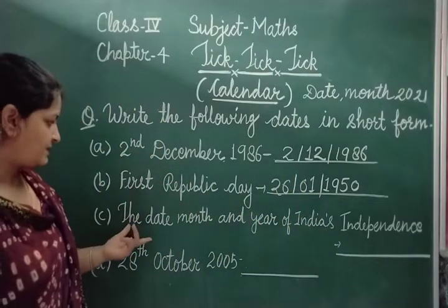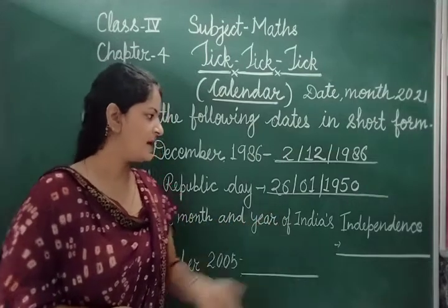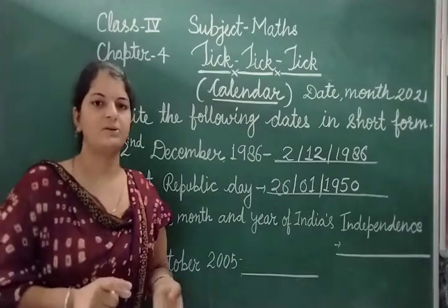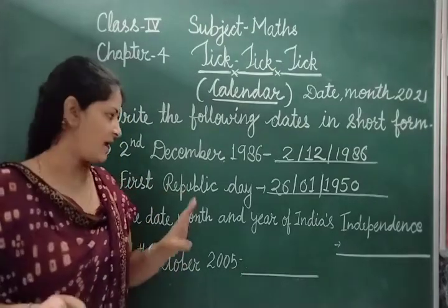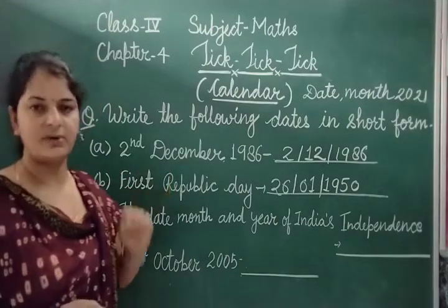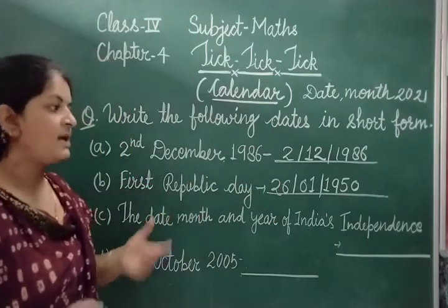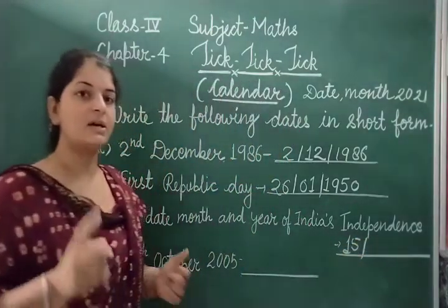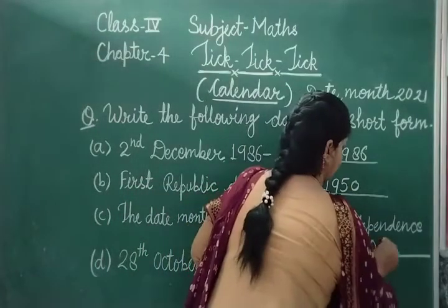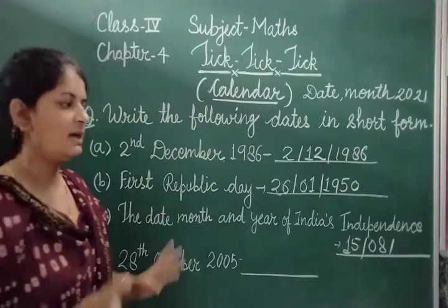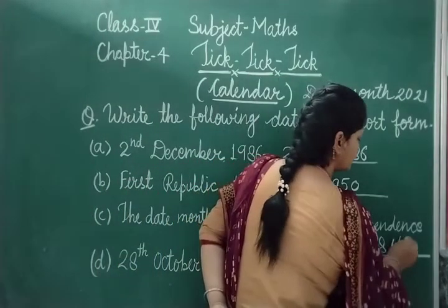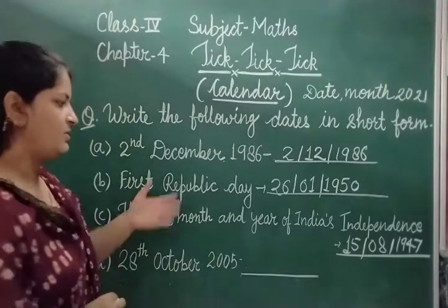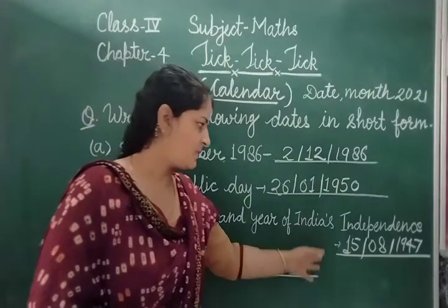Same way — find the date, month, and year of India's Independence Day. Our country became independent for the first time. We celebrate it every year on 15 August. Independence Day first happened in 1947. So the answer is 15/8/1947.